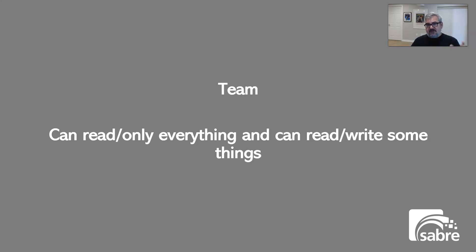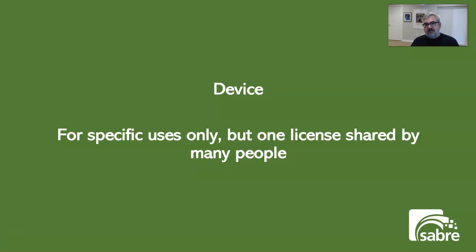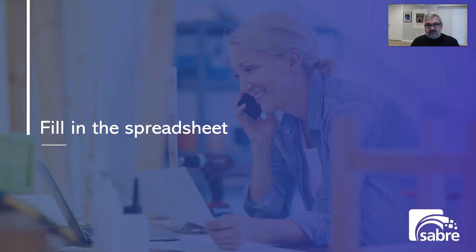The team member license is a read-only user license with very limited read-write capabilities. Team members can create timesheets, record time, and use ISV add-on products to record information and time. Team member licenses also include a Microsoft Power Apps license — at Sabre, for instance, we use Power Apps to collect production time for some clients. The device license is intended for a particular computer, console, or tablet shared by many people. It's kind of like a full user but limited in what you're allowed to do with it.